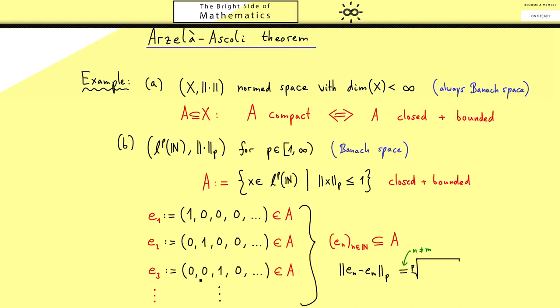So we have the pth root and inside we add the absolute values of the entries to the power p. However most of them are just zeros. We have only two positions where something happens. We have one position with a 1 and another one with a minus 1. Hence in the pth root we have the absolute value of 1 to the power p plus the absolute value of minus 1 to the power p. So we just have the pth root of 2. Now please note this works for all n and m as long as they are not chosen as the same number.